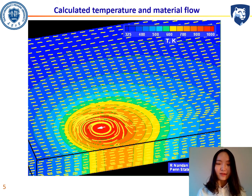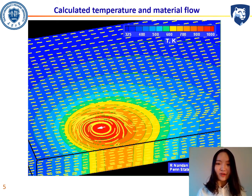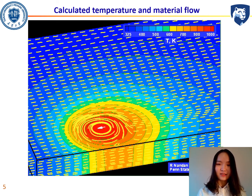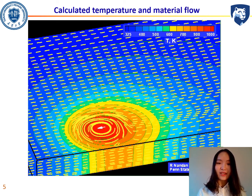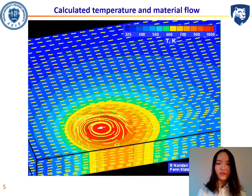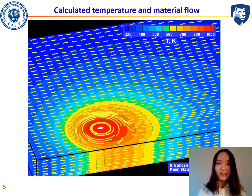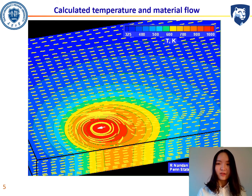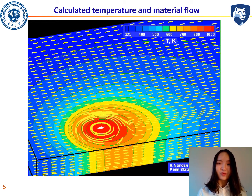Here is an animation that shows us how the material flows around the tool pin. We can see that the tool pin moves from the right to the left side. At the back of the tool pin, there is a region where very little material can fill in — that is the place where it is most likely for a void to form.